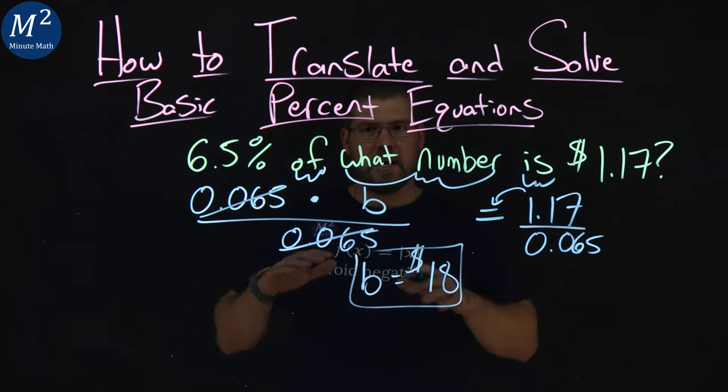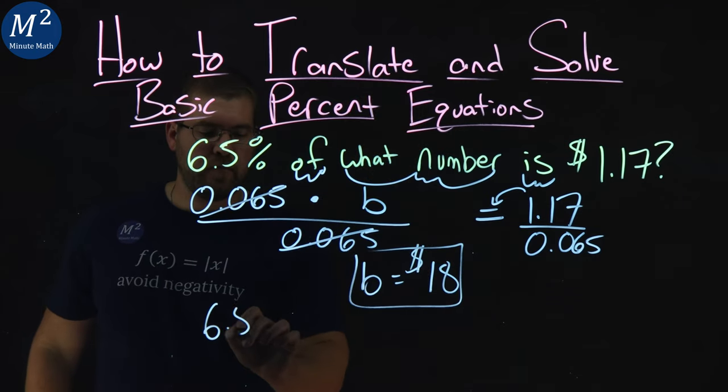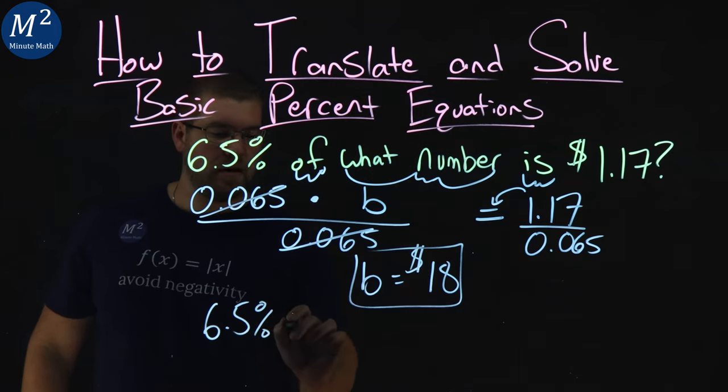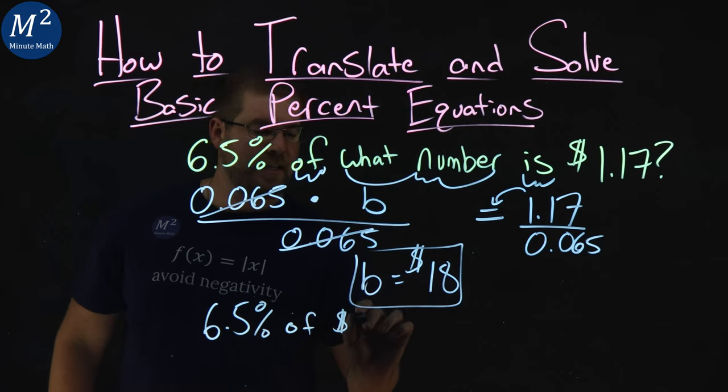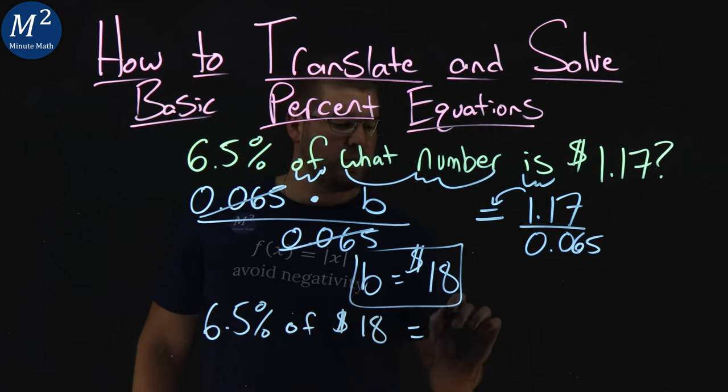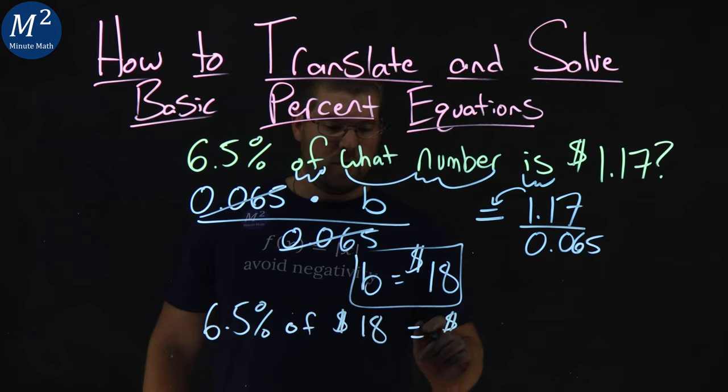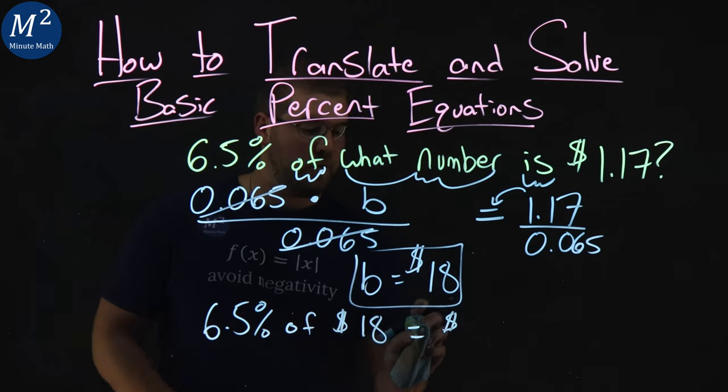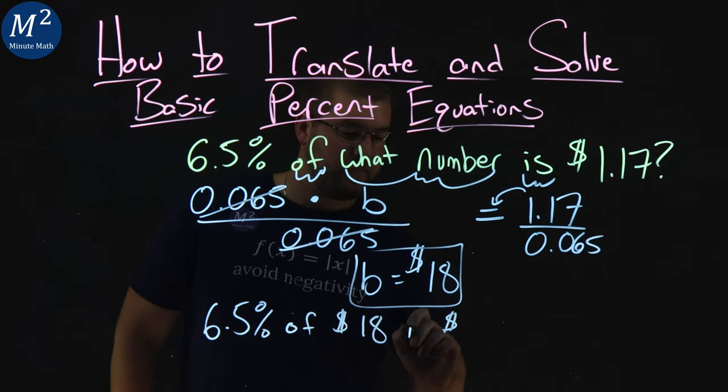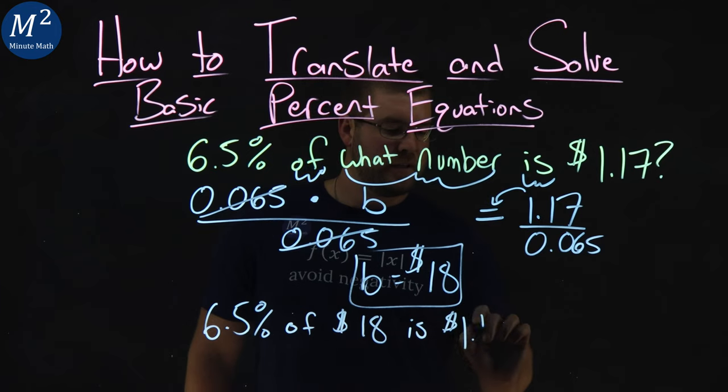So we can write this now as a final statement. 6.5% of $18 is - don't put equals, the word is here - is $1.17.